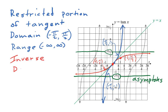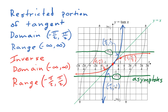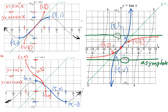This inverse tangent function has a domain of negative infinity to positive infinity, which matches the range of the original tangent. And it has a range of negative pi over 2 to positive pi over 2, which matches the domain of the original tangent function. This inverse can be written y equals tangent inverse x — the little negative one means inverse — or y equals arctangent x. Both are used and have the same meaning. We have now found inverses for the three main trig functions: sine, cosine, and tangent. In a future video, we will also find inverses for their reciprocals — cosecant, secant, and cotangent.